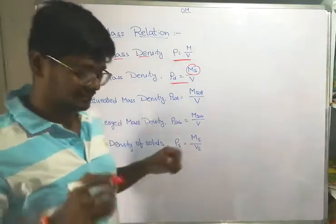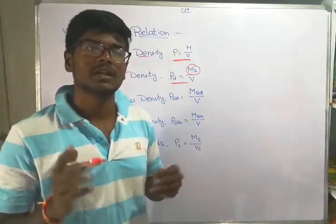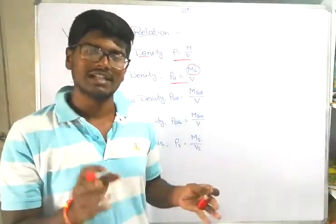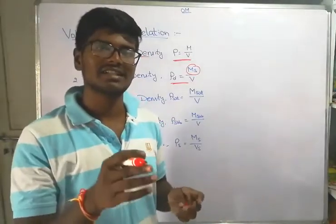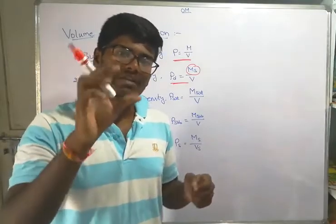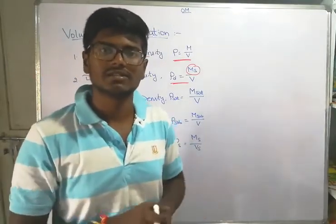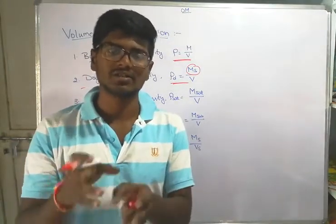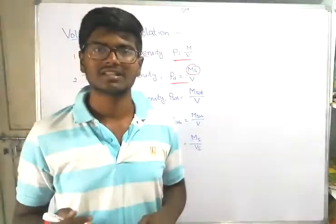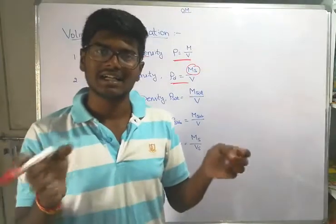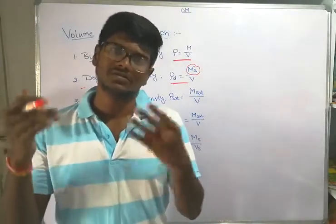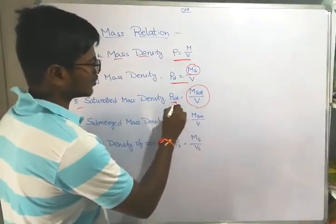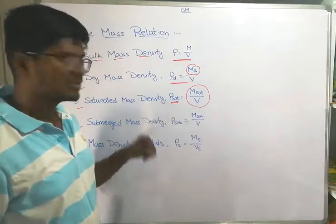Next is saturated mass density. When the soil is fully saturated, all the air voids are filled with water. If air voids are present, the moisture fills them out, making it fully saturated. The saturated mass density is the total mass of the saturated soil divided by the total volume.